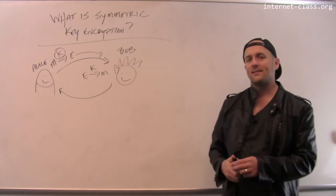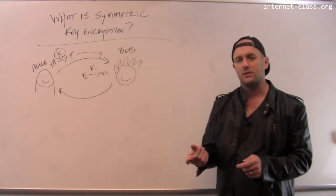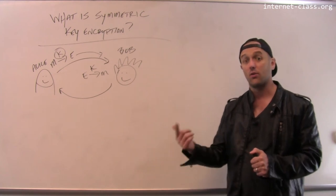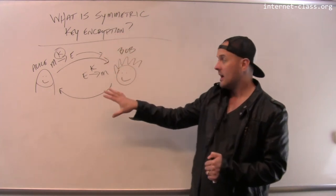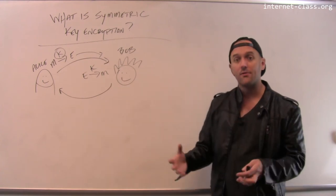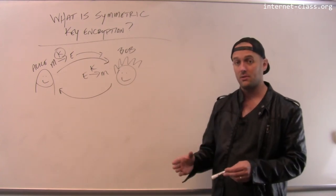In certain cases, it's not a single key, but the keys are related to each other. So I can derive the decryption key from the encryption key or vice versa. But the real thing that's important here is that there's a single key that Alice and Bob have to agree on before they begin to communicate with each other.